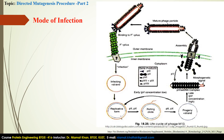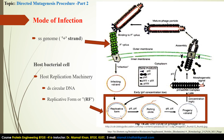Minor coat proteins help M13 viruses to attach to sex pili of E. coli during infection. After binding to sex pili, M13 viruses inject their genomic DNA into the host bacteria. Major coat proteins are stripped off on the surface of E. coli while minor coat proteins remain attached. The genomic circular single-stranded DNA molecule enters into the cytoplasmic region of the host cell, and the host replicative machinery converts the single-stranded positive DNA strand into double-stranded circular DNA, known as the replicative form or RF.